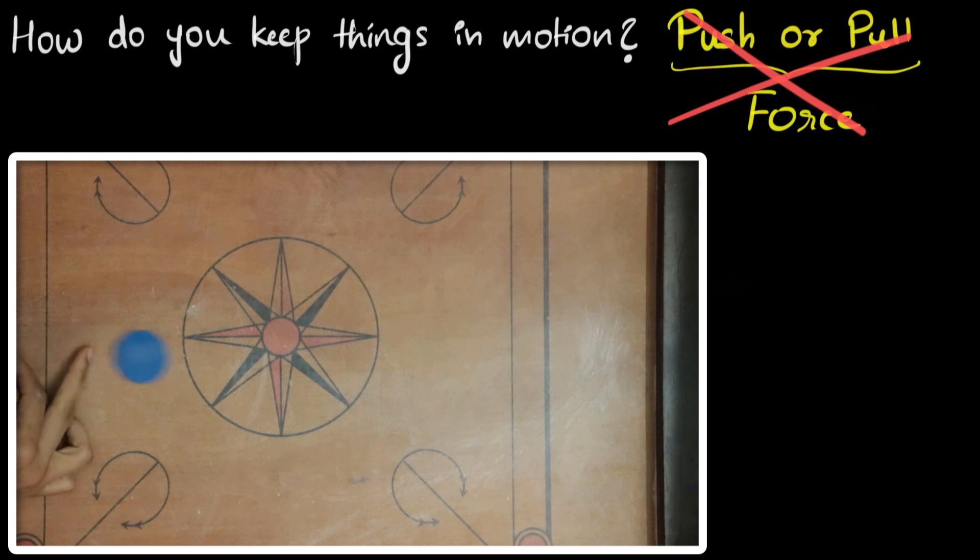But as the striker loses contact from my finger, I stop pushing it. There's no longer a push anymore. And what we are seeing after that is that the striker slows down, slows down, and eventually comes to a stop.